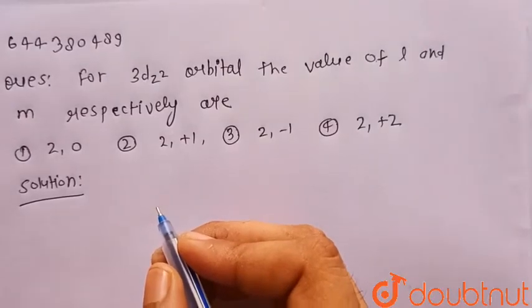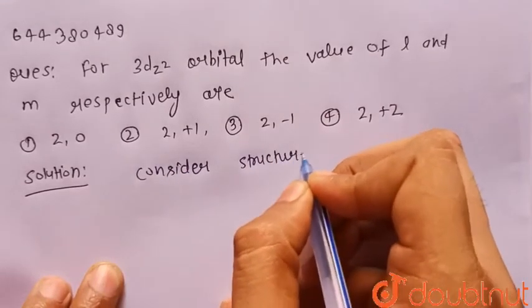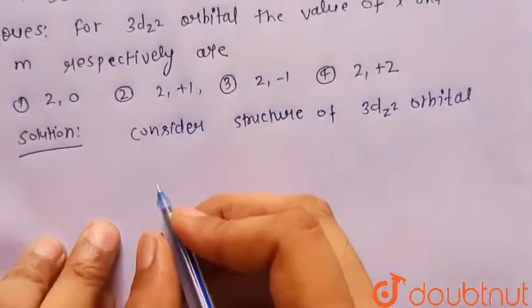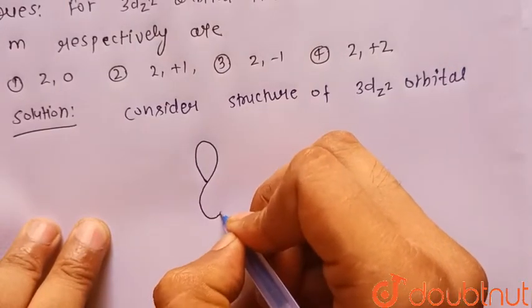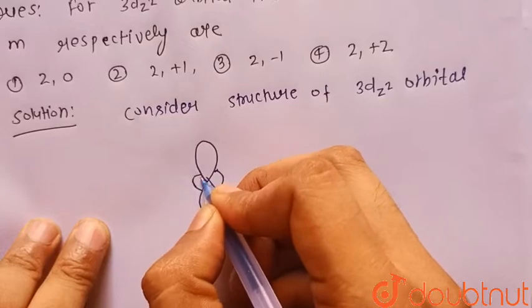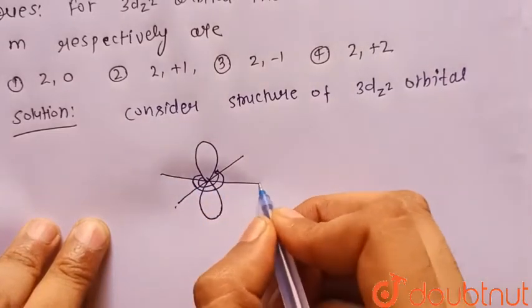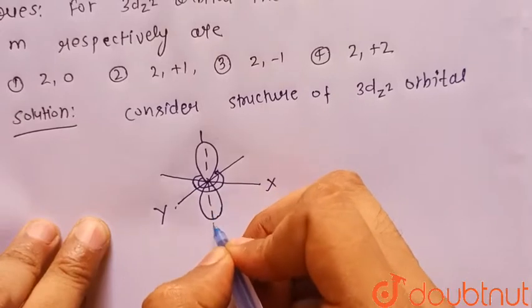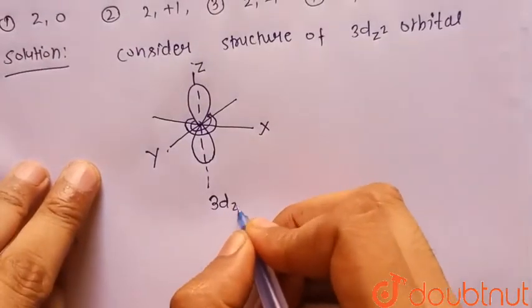Consider the structure of the 3dz² orbital. This is x, this is y axis and this is z axis. This is the structure of 3dz² orbital.